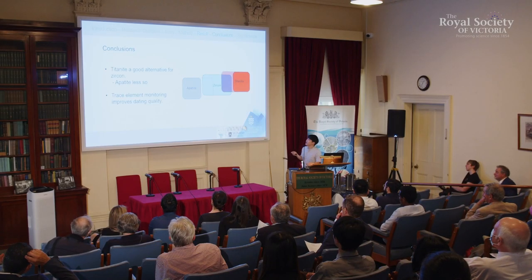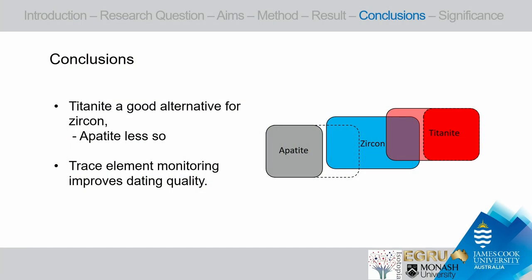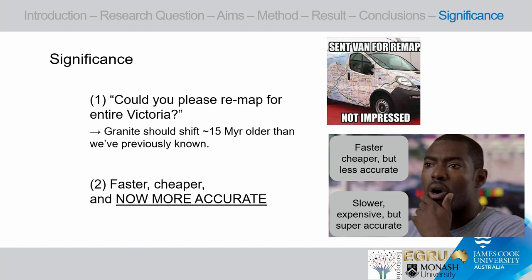In conclusion, we found that titanite is a good alternative for zircon, while apatite is less so. Trace element monitoring and filtering works really well and improves dating quality a lot. For significance: the younger ages from previous studies of this granite are actually common for many granites across the Victorian area because they all used the old technique. If they use the technique I suggest in this study, they will get different ages — it's time to understand the real history of the platform we step on.